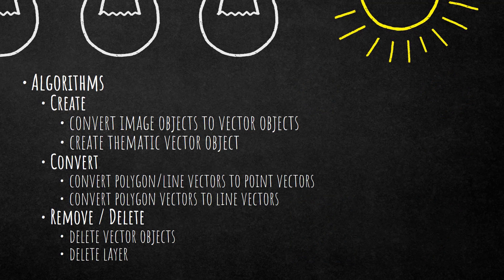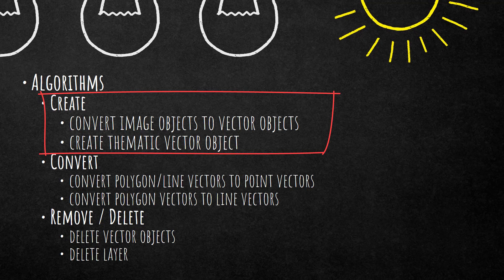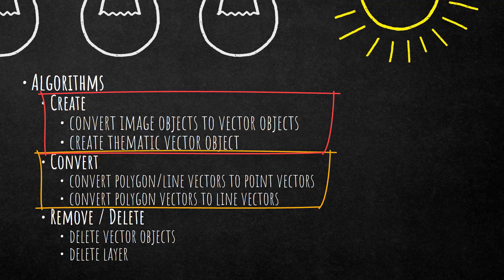Here's a quick look at the algorithms we're going to use. For creation: convert image objects to vector objects, and create thematic vector object. For conversion, two algorithms: convert polygon/line vectors to point vectors, and convert polygon vectors to line vectors. For removal: delete vector objects and delete layer. The result of each is different, which I'll show you in a moment.